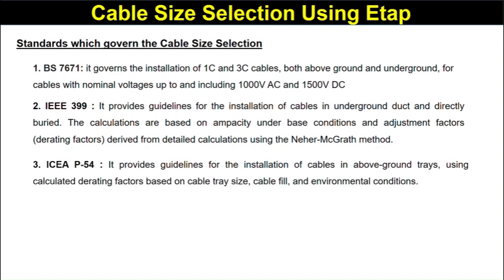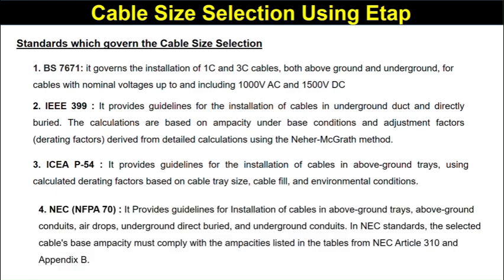ICEA P-54 provides guidelines for the installation of cables in above-ground trays, using calculated factors based on cable tray size, cable fill, and environmental conditions. NEC/NFPA 70 provides guidelines for installation of cables above ground, underground directly buried, and underground conductors. Under NEC standards, selected cables based on ampacity must comply with the ampacity listed in tables from NEC Article 310 and Appendix B.